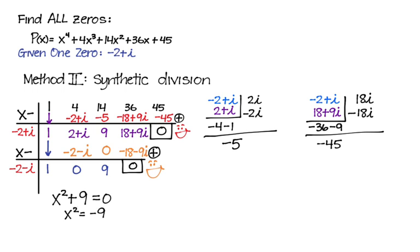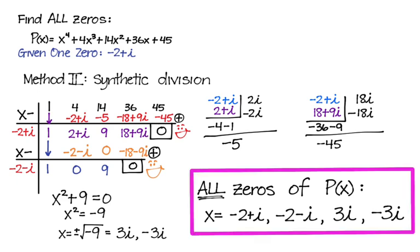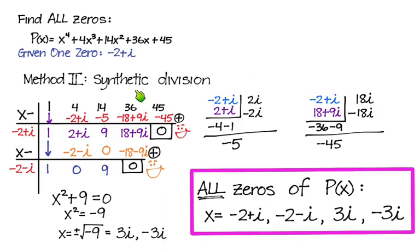We set x squared plus 9 equal to zero and solve, just like before, getting 3i and negative 3i. So all the zeros of this polynomial are: the originally given zero negative 2 plus i, its conjugate negative 2 minus i, and the two we found — 3i and negative 3i. Does it matter which method you use? Not at all. Method 1 uses long division after multiplying the conjugate factors. Method 2 uses synthetic division, dividing by each complex zero sequentially. This method requires a bit more complex number multiplication, but it's very doable. You get to choose whichever method you like.